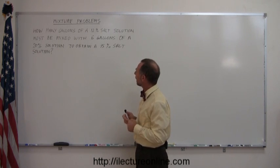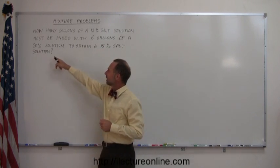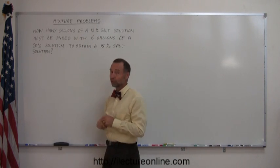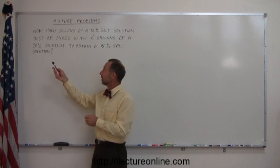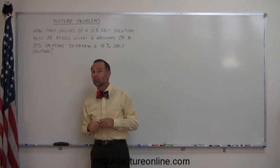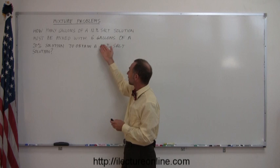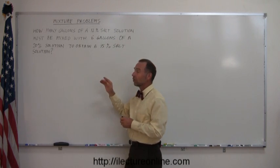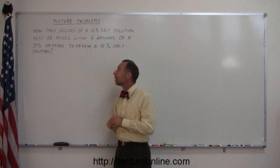They tell you that you have six gallons of the 20% solution. They don't tell you how many gallons you have of the 12% solution. Matter of fact, that's what they're looking for. They say, how many gallons of the 12% solution do you have to mix with six gallons of the 20% solution to end up with a 15% salt solution, and they don't tell you how many gallons you'll end up with.